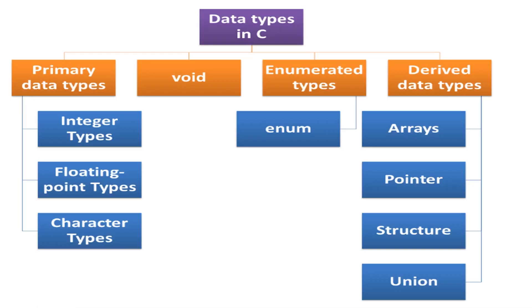Let me open a slide. What you see here is what engineering colleges teach you most of the time — the data types in C or C++. C++ will have object-oriented concepts like classes and objects. If you look here, we have the primary data types, void, enum, and then the derived types, where we have structure and union.